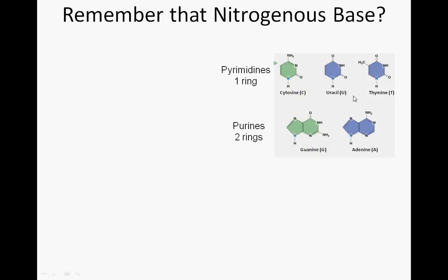The ones with the single rings are called pyrimidines, and there are three different pyrimidines: cytosine, uracil, and thymine. The bulkier, bigger ones with the double rings are called purines, and we only have two of those to worry about: guanine and adenine.